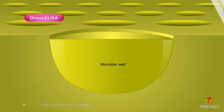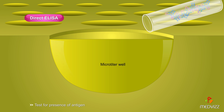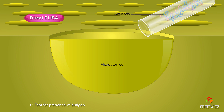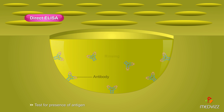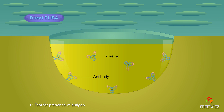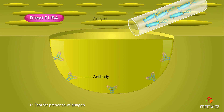The direct ELISA is a test for the presence of antigen. In this procedure, a known antibody is adsorbed to the inside of the well in a microtiter plate. After rinsing to remove excess antibody, the sample suspected of containing the antigen is added.